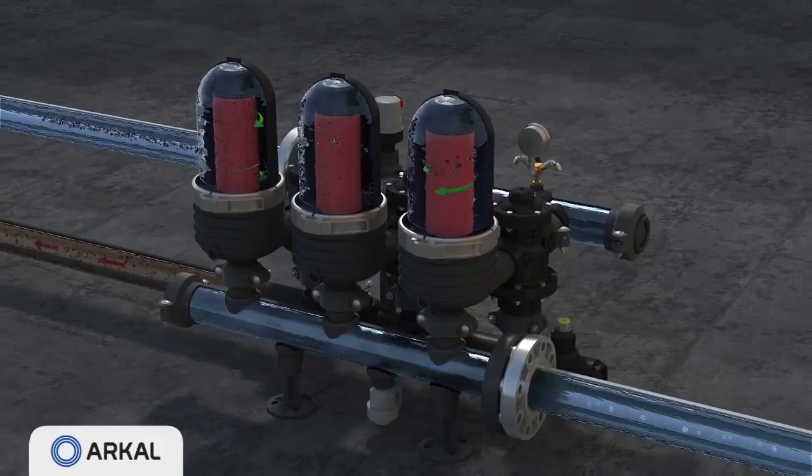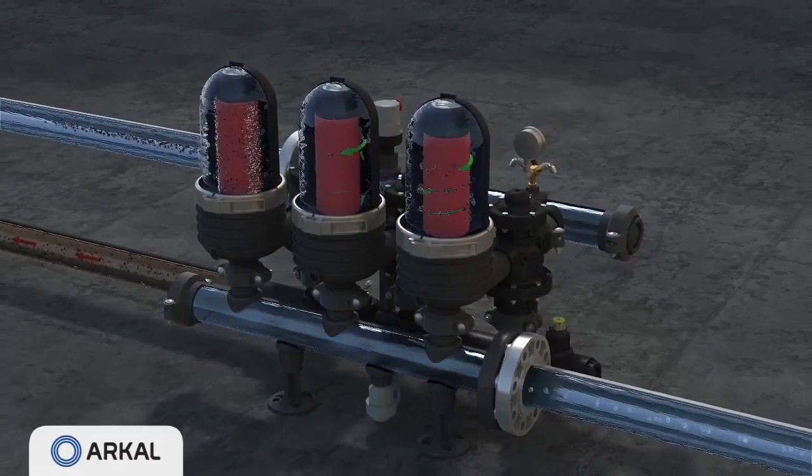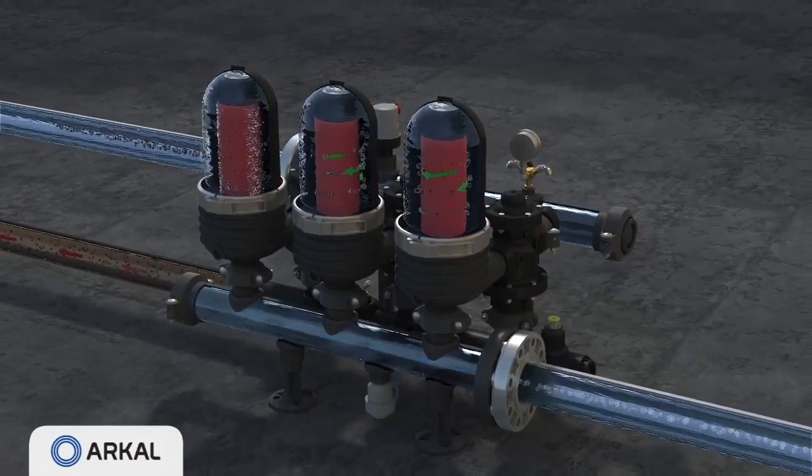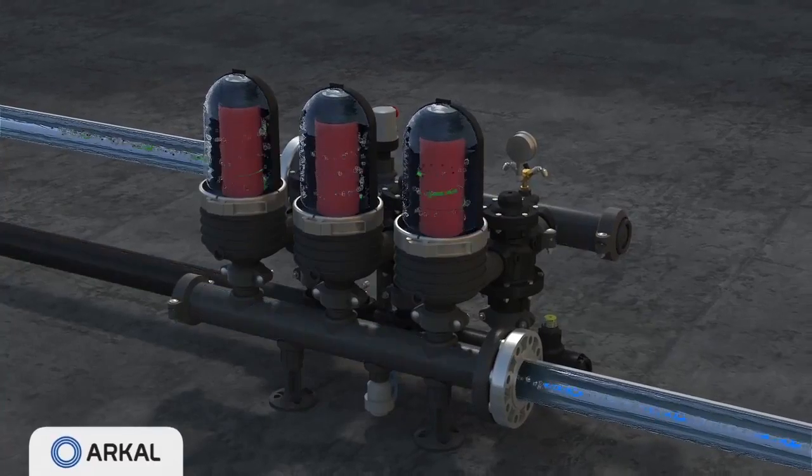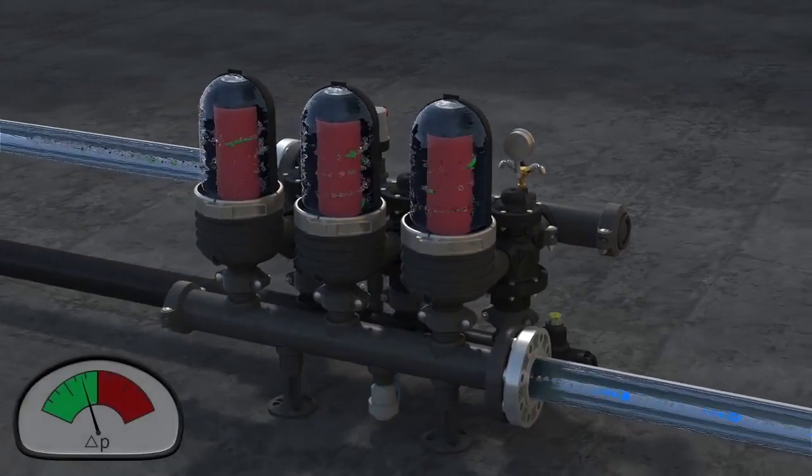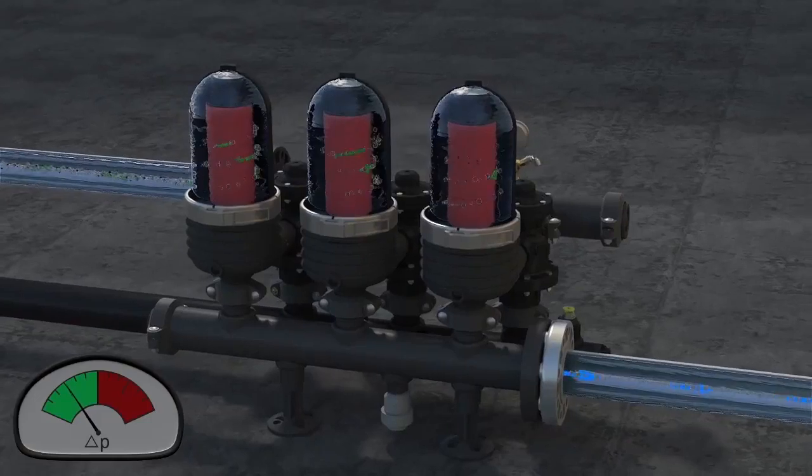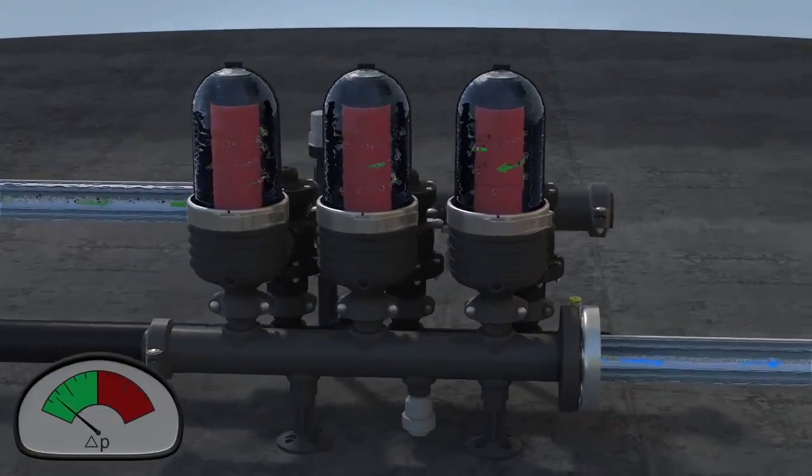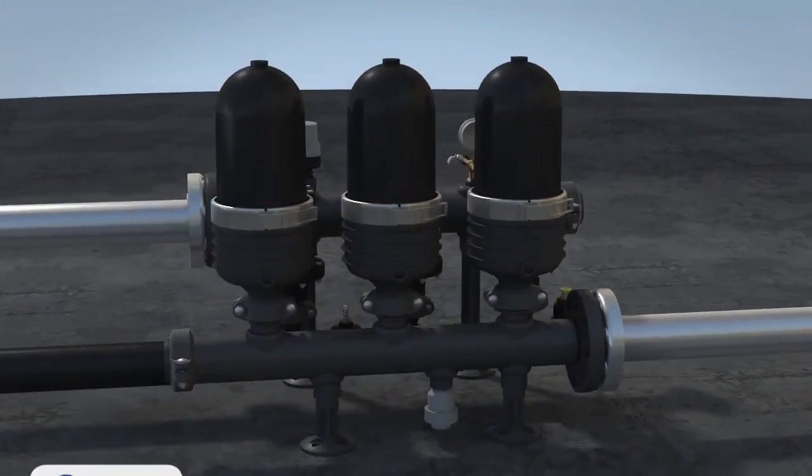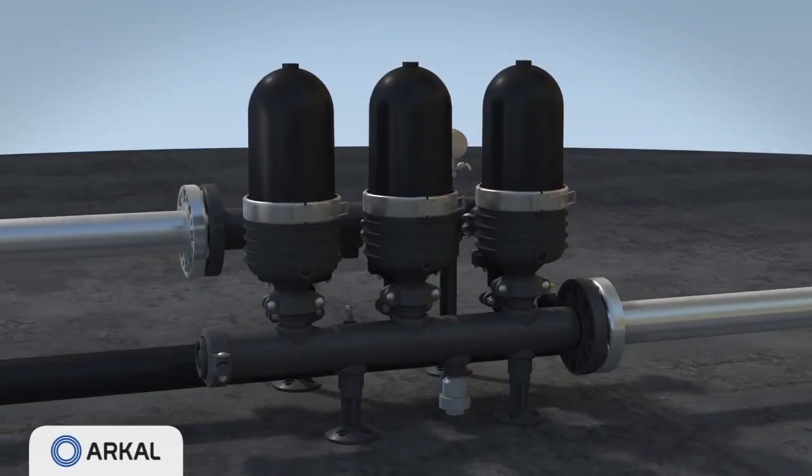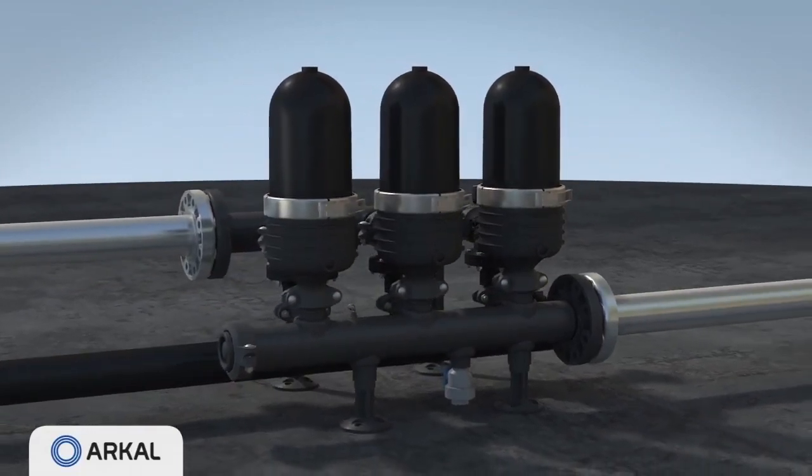At the end of its allotted cleaning time, the flushing module returns to filtration mode and the next consecutive module starts cleaning. This process continues till the last module is clean and the PD switch returns to its green zone. The system returns to filtration mode until the next flushing cycle is triggered.